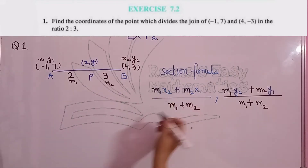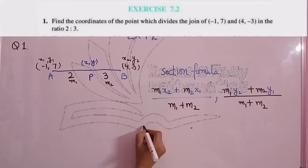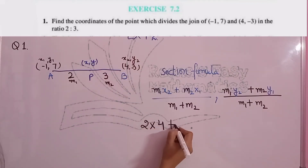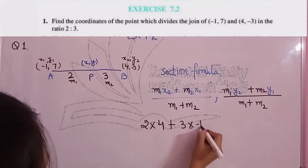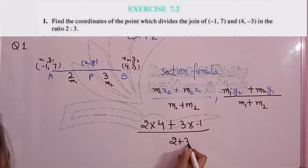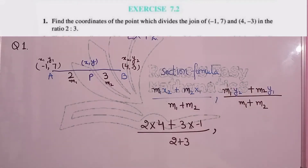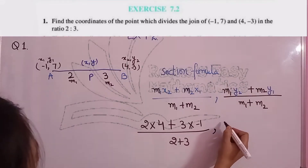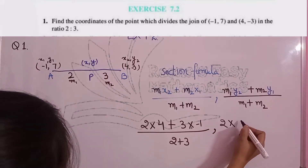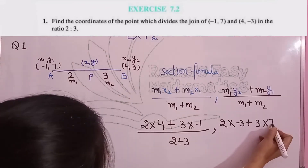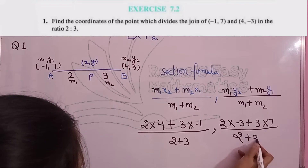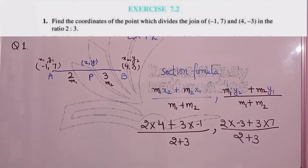You only have to put in the values. According to the question, M1 is 2. X2 is 4 plus M2 is 3 multiplied by X1 which is -1, upon 2 plus 3. For Y coordinates: 2 into -3 plus 3 into 7 upon 2 plus 3. Almost all things remain the same; only pay attention to X1, X2 and M1, M2.